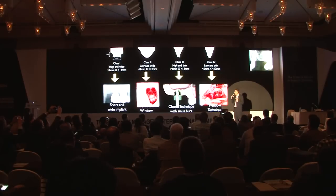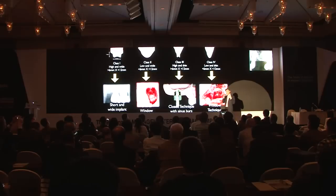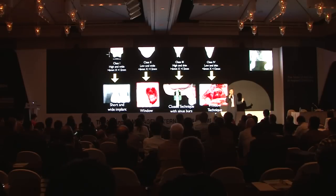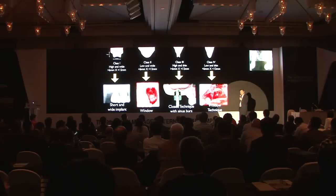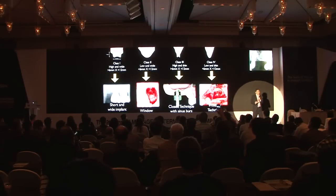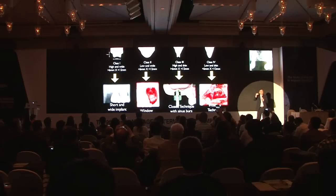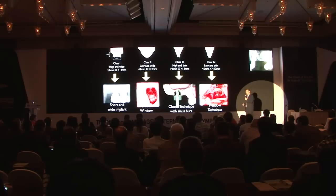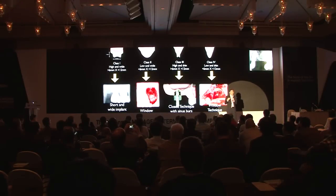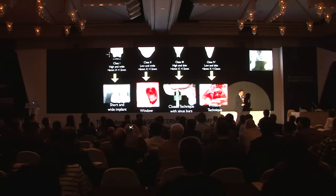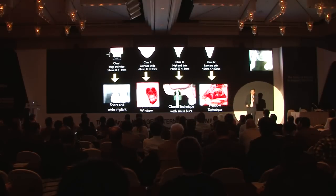Short and wide implants require a minimum of 6 mm bone height and greater than 12 mm of bone width. When we have greater than 6 mm and less than 12 mm, it is okay to do a blind technique — we just need to lift a little bit to augment the sinus. However, in class 4 morphology, only lateral window technique will work because of severely pneumatized sinus and very thin ridge.